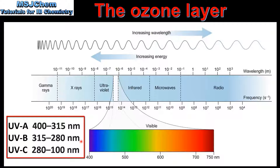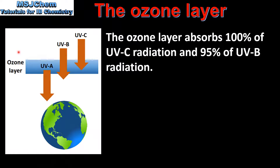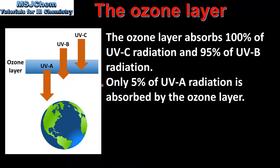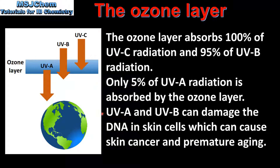The ozone layer mainly absorbs UVB and UVC radiation. UV radiation can be divided into UVA, UVB and UVC. As we can see from this diagram, the ozone layer absorbs 100% of UVC radiation and approximately 95% of UVB radiation. Only 5% of UVA radiation is absorbed by the ozone layer. Both UVA and UVB can damage the DNA in skin cells, which can cause skin cancer and premature aging.